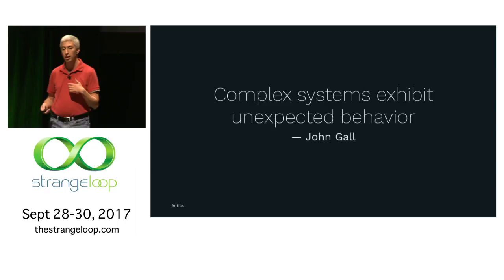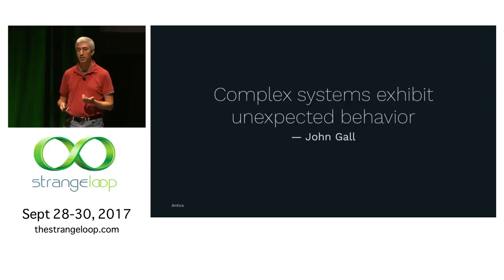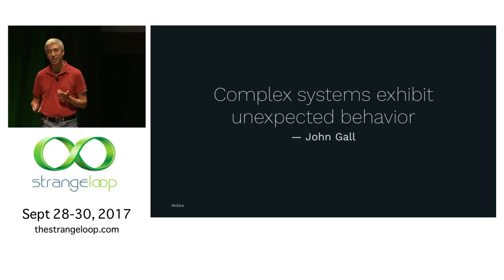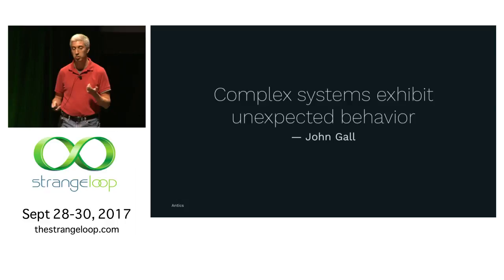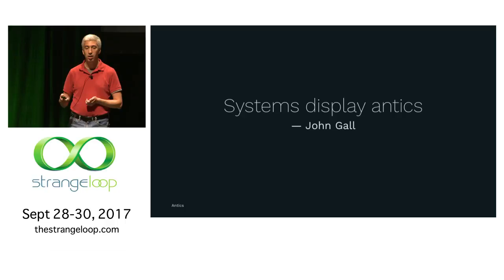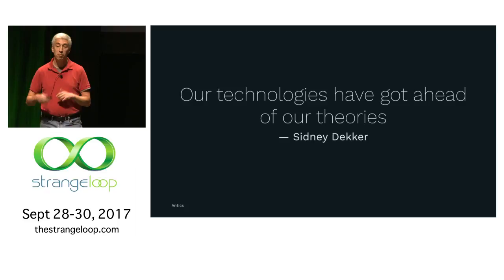The phrase 'complex systems exhibit unexpected behavior' comes from John Gall. Gall was a pediatrician who wrote a book in the 70s called System Antics about complex systems and how they behave in really weird ways. It's surprising how much of what he wrote is relevant to us building distributed systems today. He has this thing called the generalized uncertainty principle, which he summarized as 'systems display antics' — hence the name of this part of the talk.